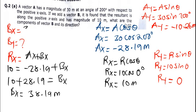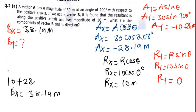So Bx = 38.19 meters. That is the x component of vector B.